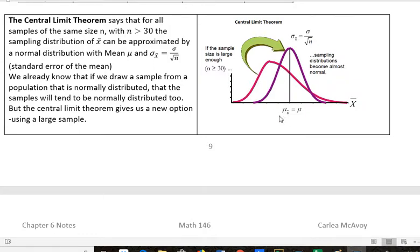But the mean for the sample, we can just use the mean for the population. So we already know that if we draw a sample from a population that is normally distributed, that the samples will tend to be normally distributed too.